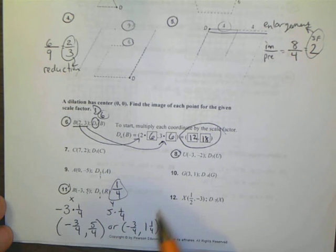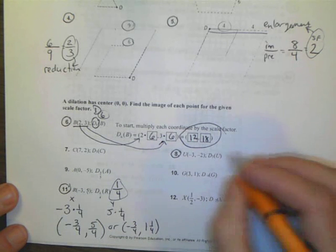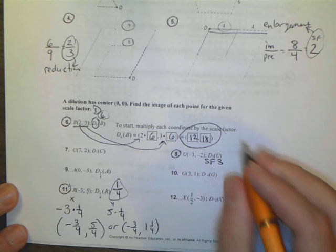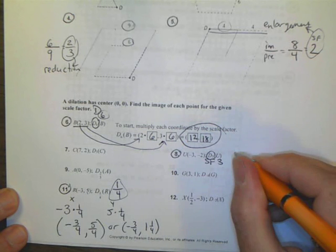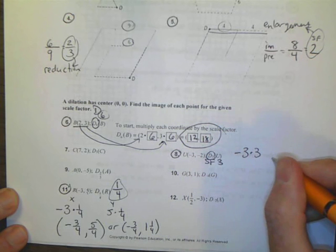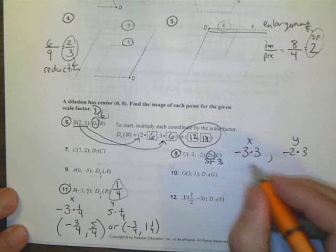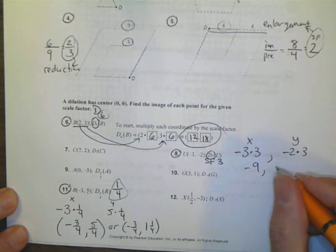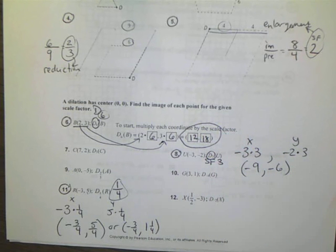I went a little out of order. Number 8 has a scale factor of 3. So I take the coordinates. Negative 3 times my scale factor is my x value, and my y value is negative 2 times my scale factor. Negative 3 times 3 is negative 9, and negative 2 times 3 is negative 6. So that becomes the new coordinate when I use that scale factor.